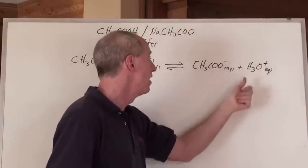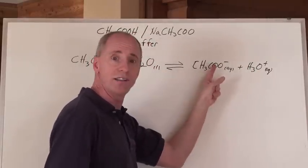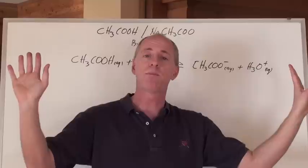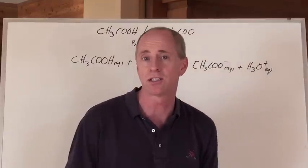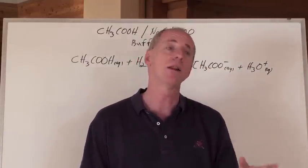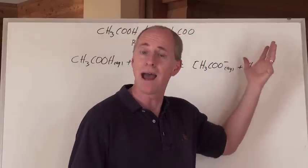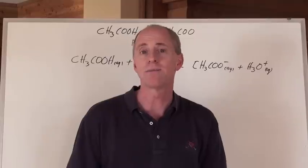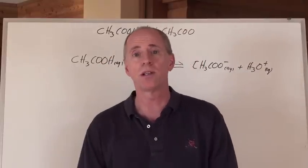And if you keep adding acid and it keeps shifting this way and you use this up, then your buffer capacity is gone and all of a sudden the pH changes like crazy. Buffers maintain a constant pH when you add small amounts of hydronium, acid, or hydroxide into that reaction. And this is the mechanism by which it operates.